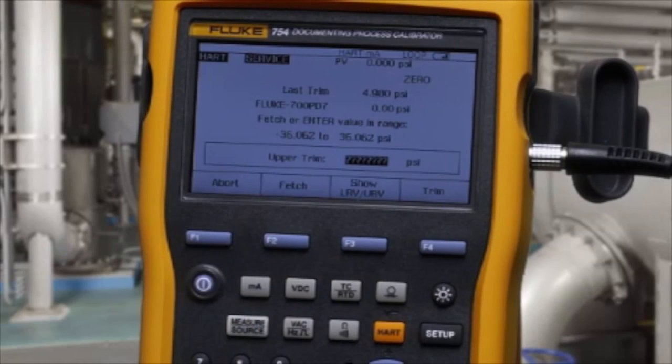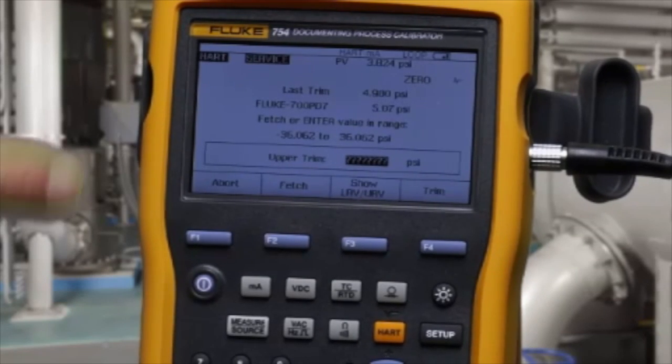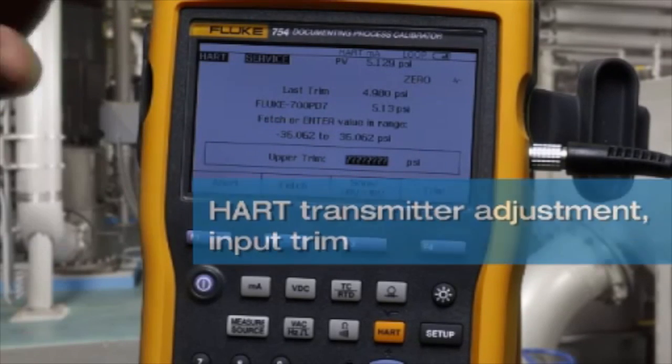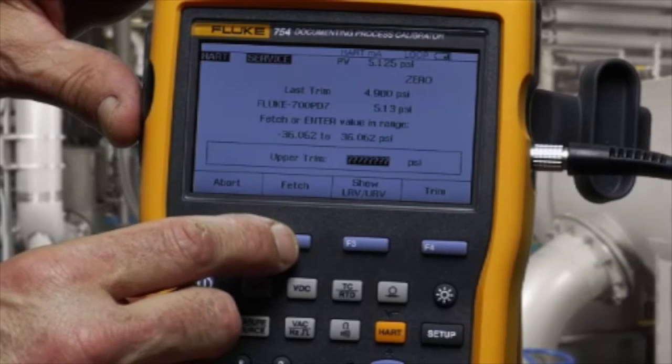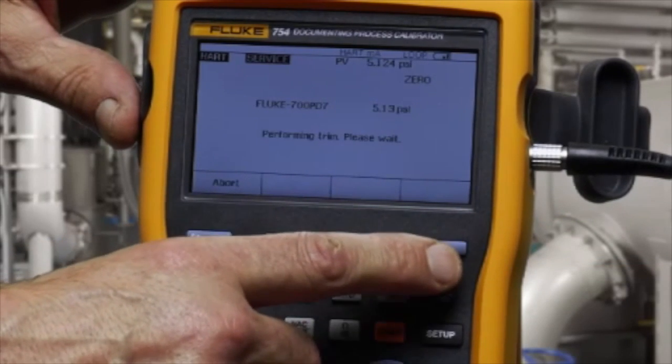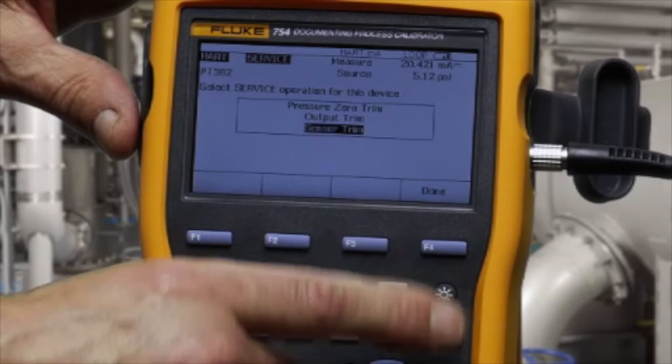Continue. Pump to full scale, which is five PSI for this device. See the pressure noted here, approximately five PSI. Fetch and trim. Done and done.